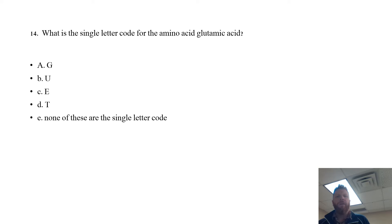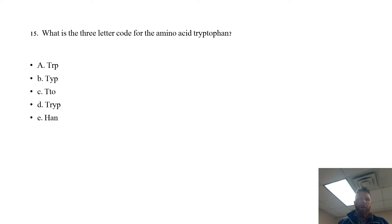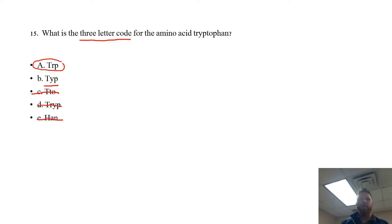This question is kind of explicit: what is the single-letter code for the amino acid glutamic acid? That is simply going to be E. You have to know your single-letter codes, your three-letter codes, and the names and structures of all 20 amino acids. What is the three-letter code for the amino acid tryptophan? Really we're down to TRP and TYP — this is an explicit question. Your three-letter code for tryptophan is TRP.